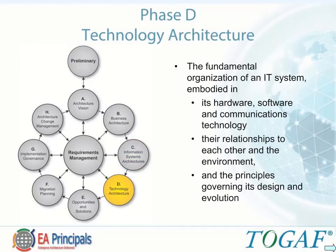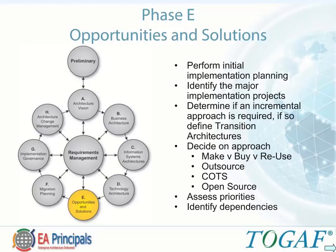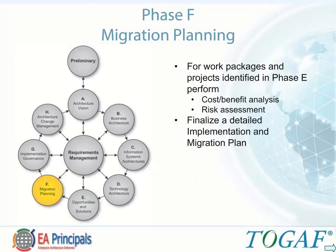Phase D is the Technology Architecture. It addresses the fundamental organization of an IT system embodied in its hardware, software, and communications technology, their relationships to each other and the environment, and the principles governing its design and evolution. Phase E is about initial implementation planning, generating an initial architecture roadmap, and identifying whether an incremental approach is needed. Phase E also assesses priorities and identifies dependencies. Phase F finalizes the architecture roadmap and a detailed implementation and migration plan, addresses work packages and projects identified in Phase E, and performs cost-benefit analyses and risk assessment.